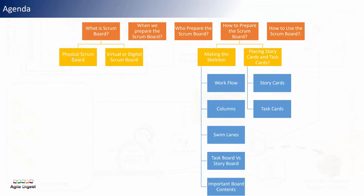Topics we'll be covering today: what is Scrum Board, the physical board or the digital board — when we prepare it, who will be preparing it, and how to prepare the Scrum Board by making the structure and placing the stories using different workflows, columns, swim lanes, what are task boards, story boards, and important board contents. We'll also understand what the story cards and task card sources are, and finally how we can use a Scrum Board. So let's begin.